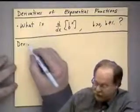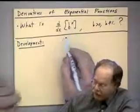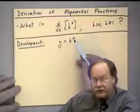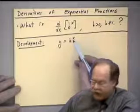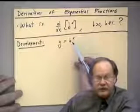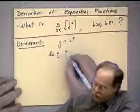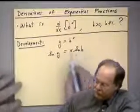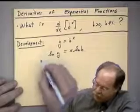We'll do a development. Write y equals b to the x. We need to bring the power down since we don't know how to differentiate exponentials yet. Any logarithm can bring a power down. Throughout this course, whenever you have a choice, use the natural logarithm. Taking the natural log of both sides: ln y equals x times ln b.